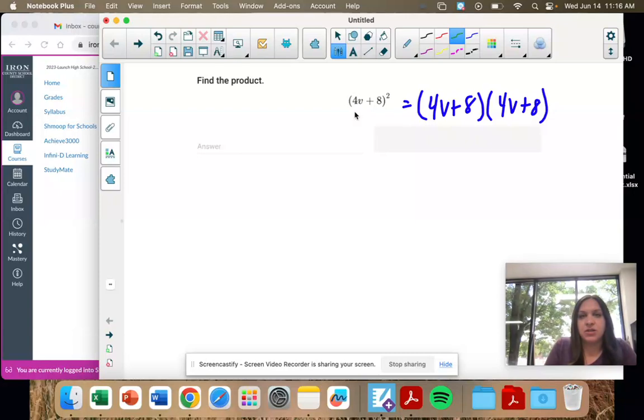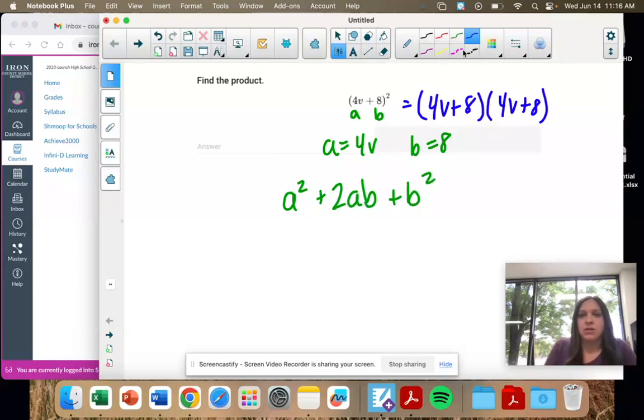The shortcut is to call this A and this B. So A is 4V, B is 8, and then we use A squared plus 2AB plus B squared. So you take the first term, 4V, and you square it.